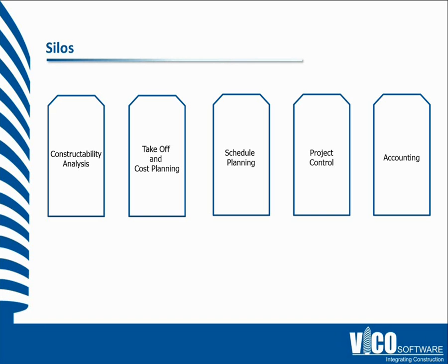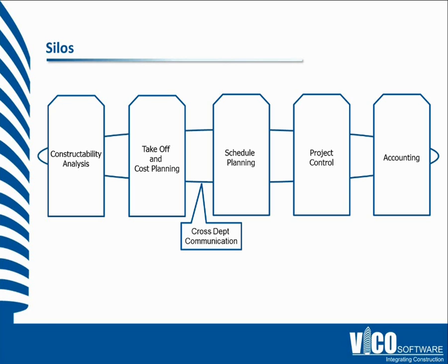To start with silos, these are just some example silos of data inside of a construction company. There are very few systems that are connected together. The norm is data is created inside of a silo and does not flow to other silos. Information is constantly recreated by different departments, and very rarely flows from pre-con through construction. That not only wastes a lot of time, it's a huge opportunity to introduce errors into the process.